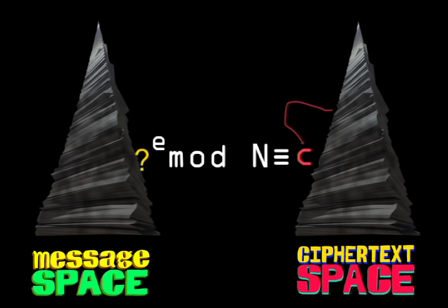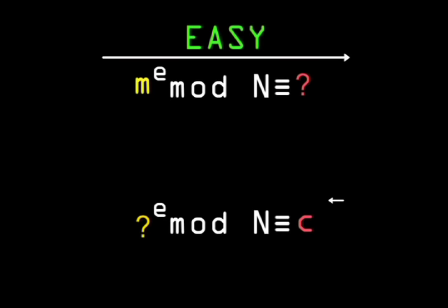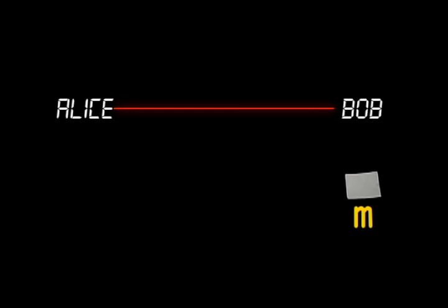However, given only C, E, and N, it is much more difficult to determine which M was used, because we'd have to resort to some form of trial and error. So this is our one-way function that we can apply to M, easy to perform, but difficult to reverse. It is our mathematical lock.